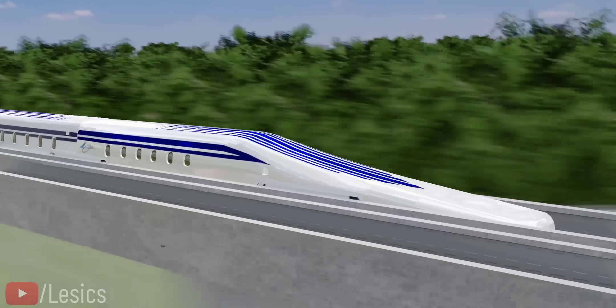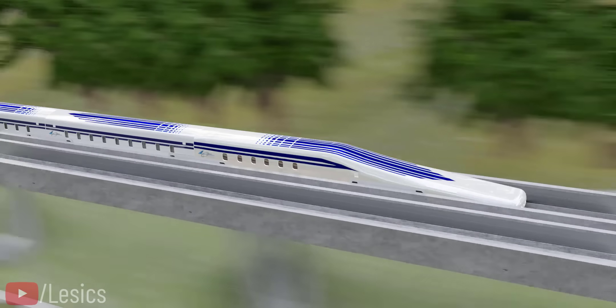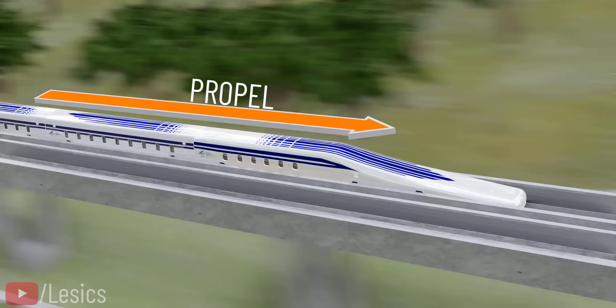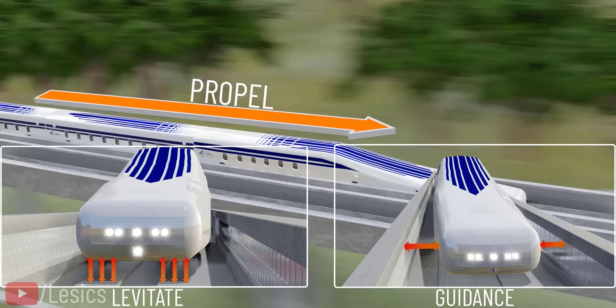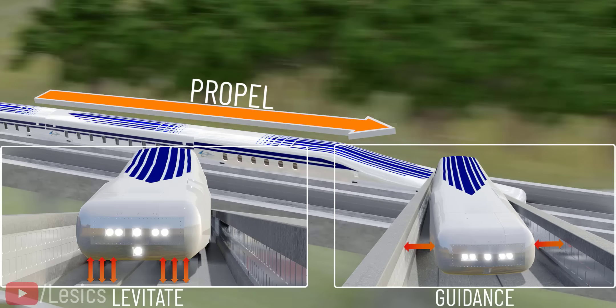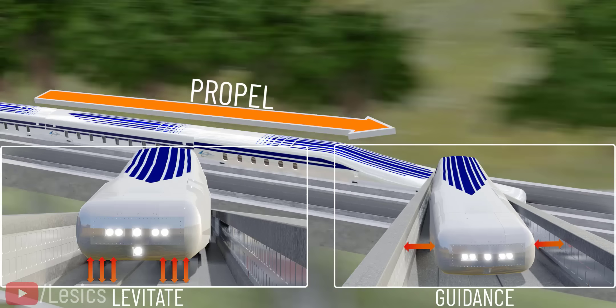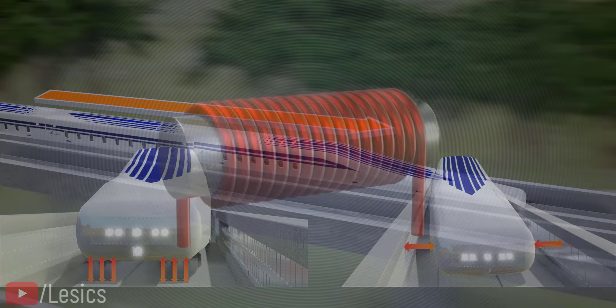To successfully operate a magnetically levitated train, we have to achieve the following three objectives: one, propel; two, levitate; and three, guidance. However, before we get into the details of how the SC Maglev train achieves these objectives, let's study the heart of this train, the superconducting magnets.